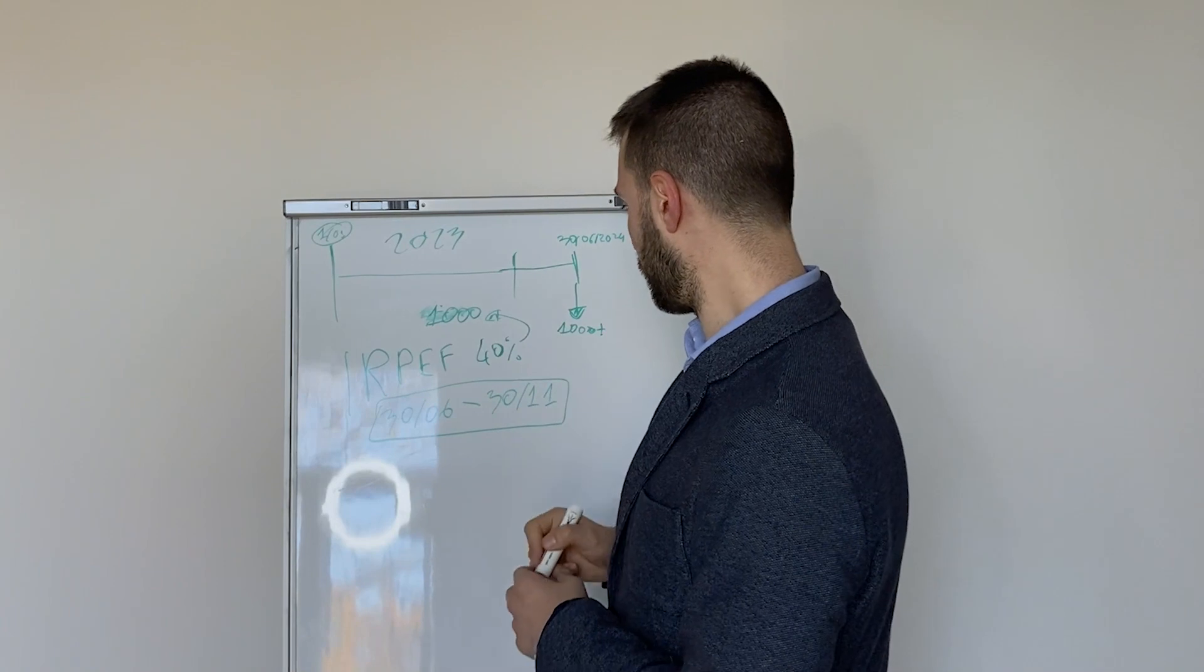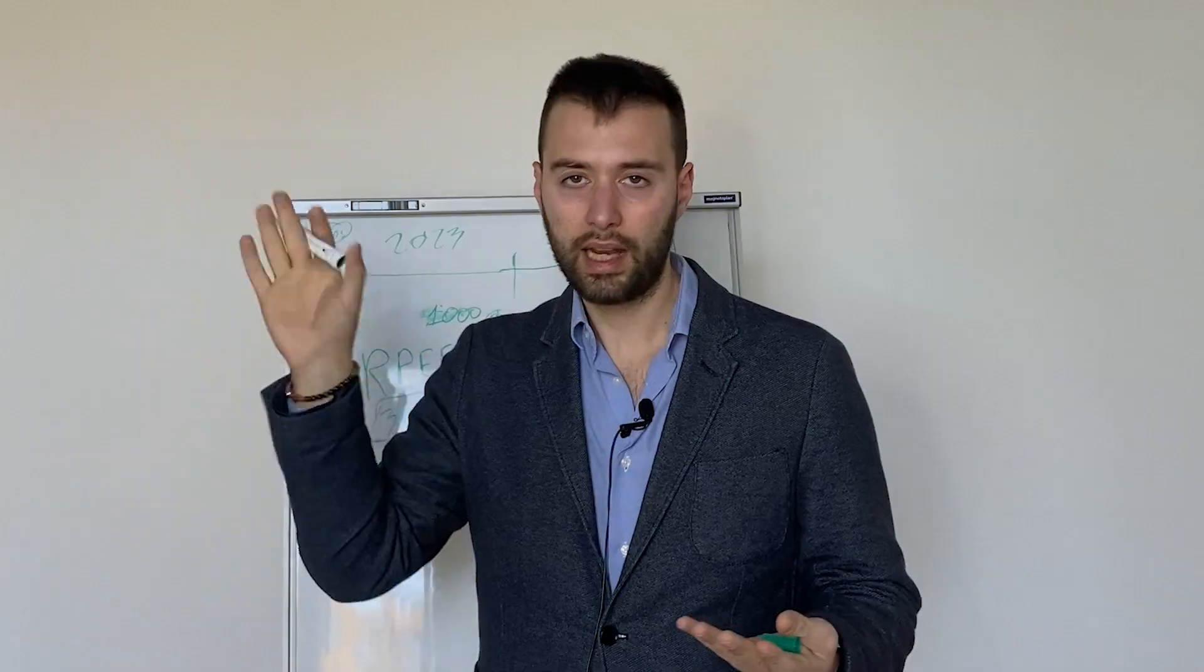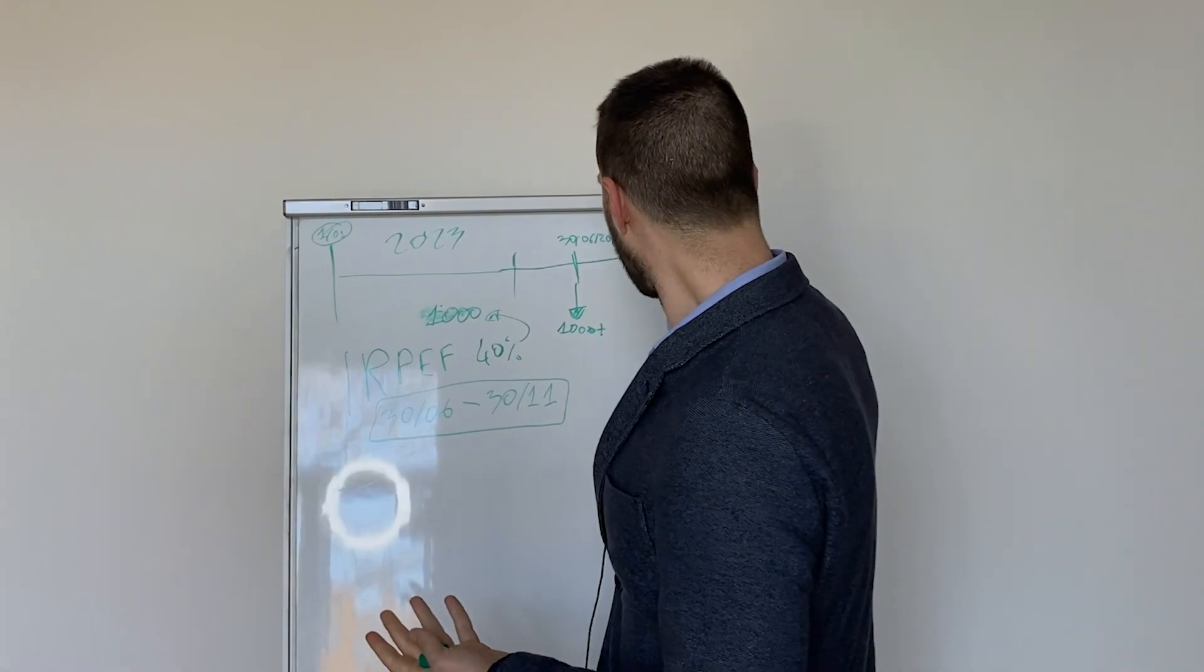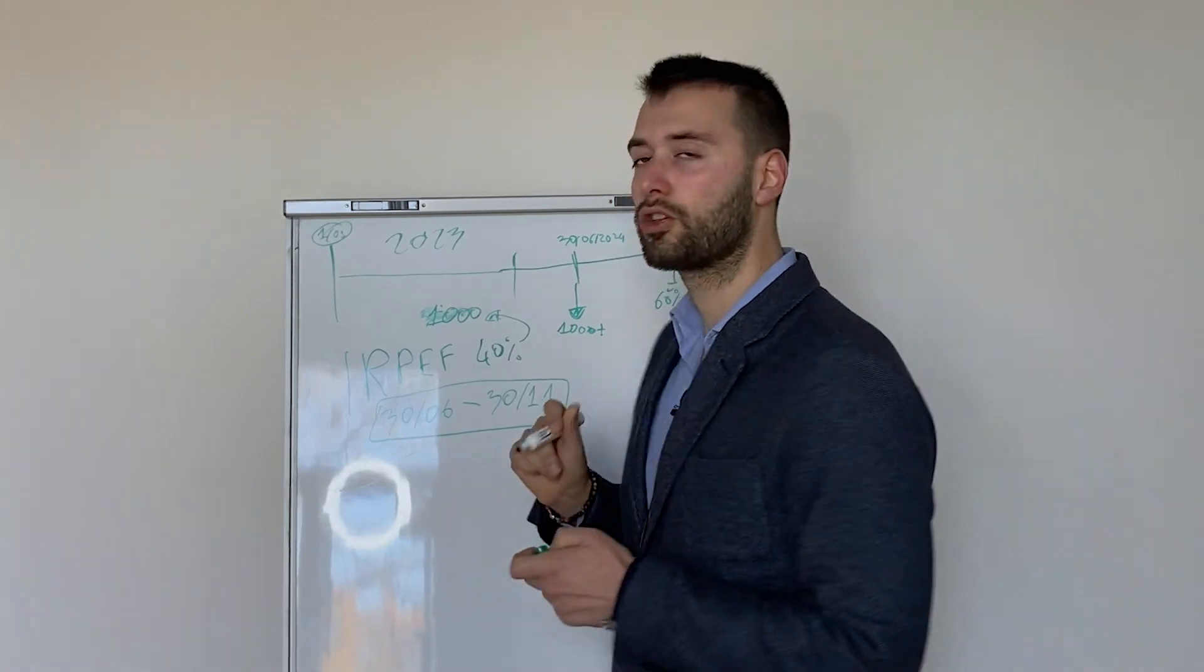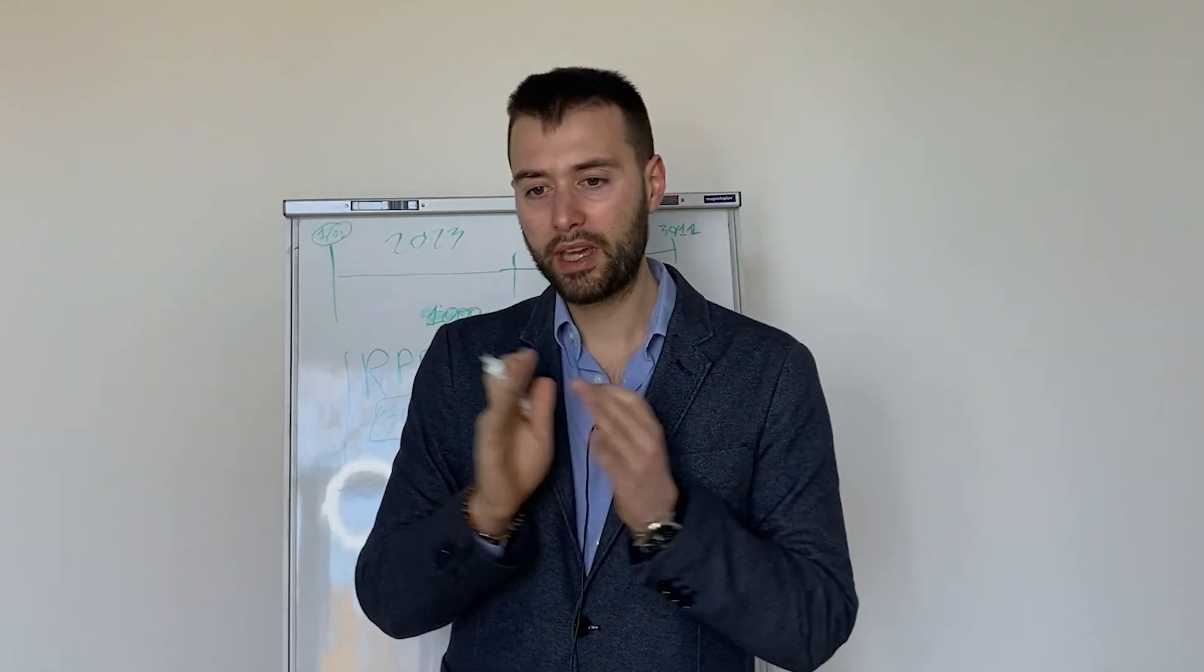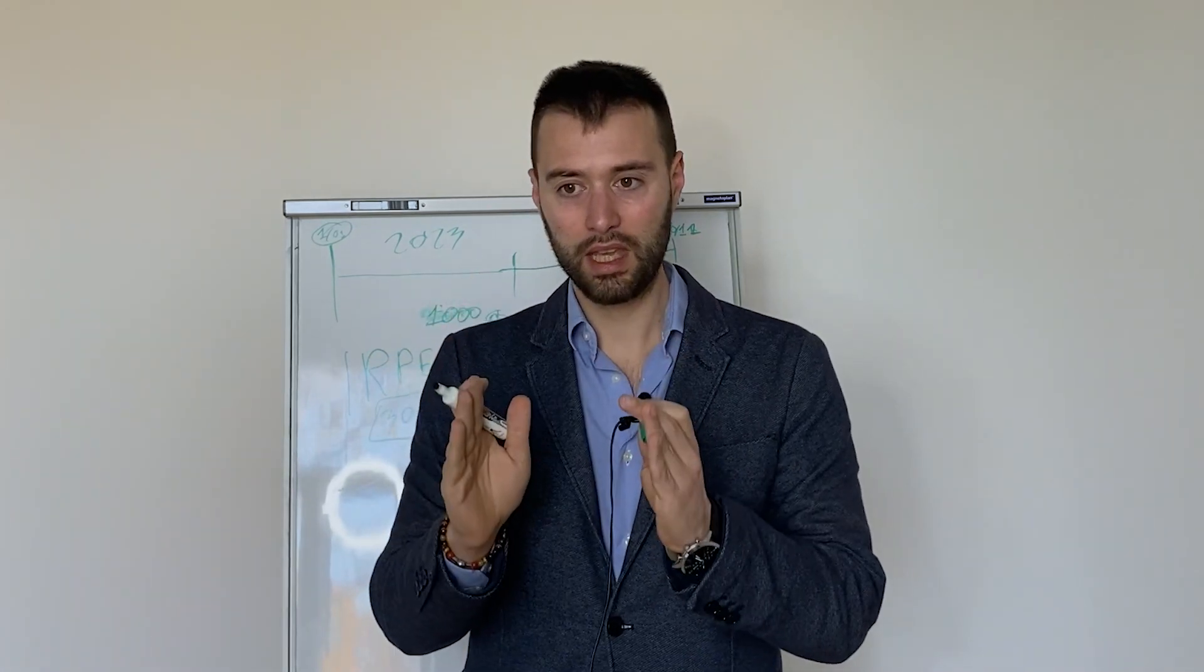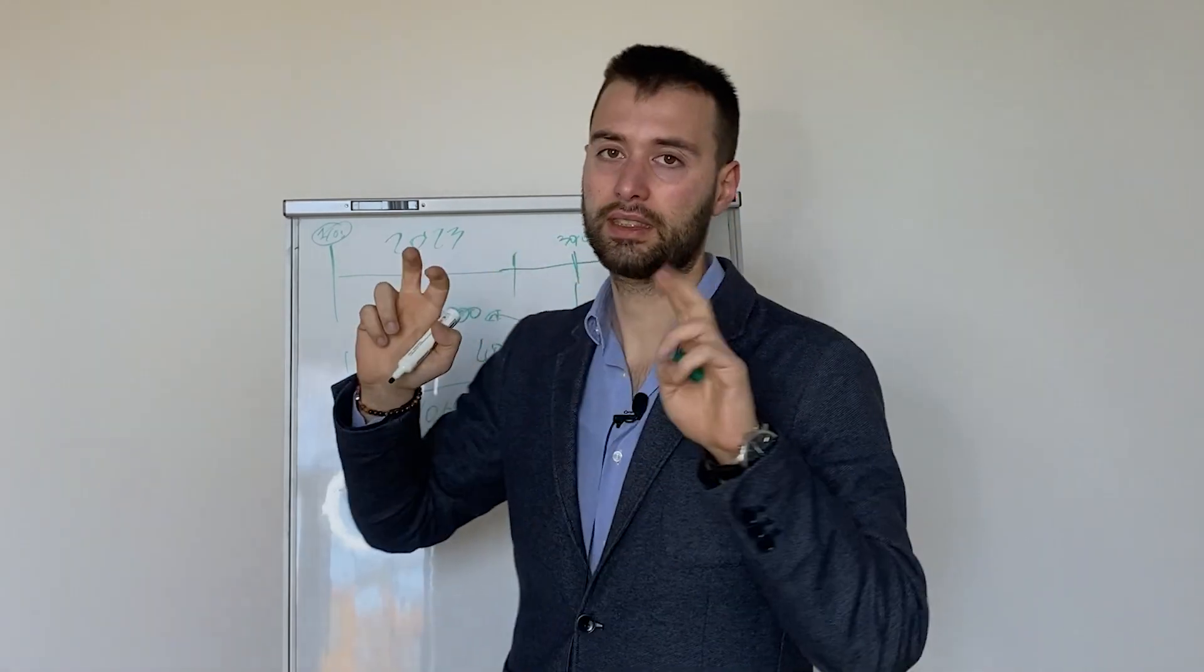pay the saldo, which is the total amount of taxes for 2023, plus 40%. This 40% is calculated on last year. What will happen on 30th of November? You will pay the 60%. So the government, the tax authorities, make sure that